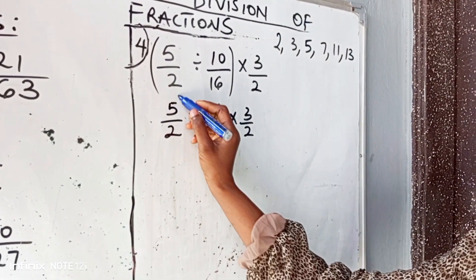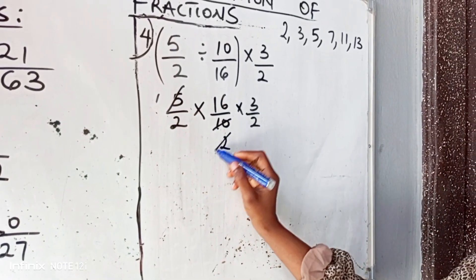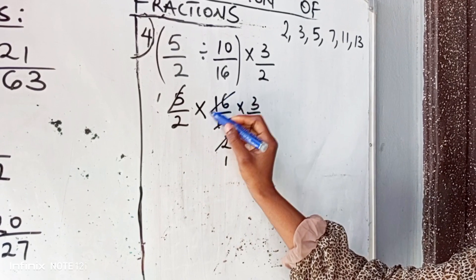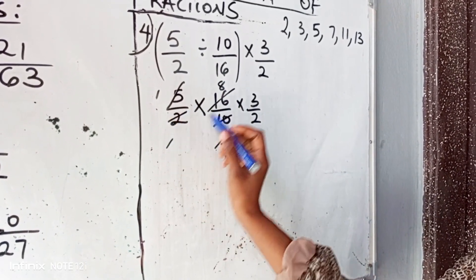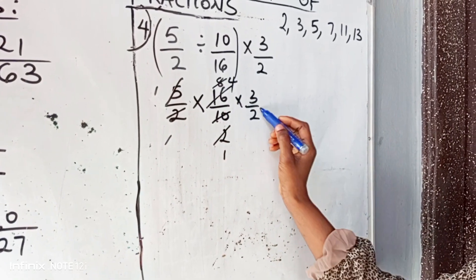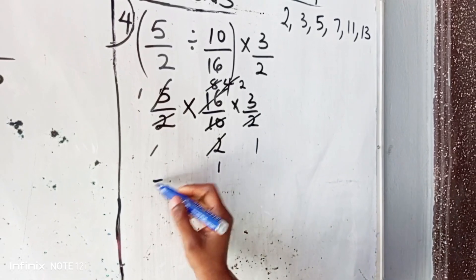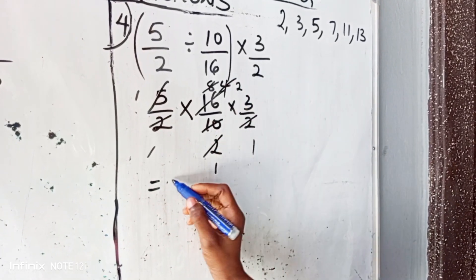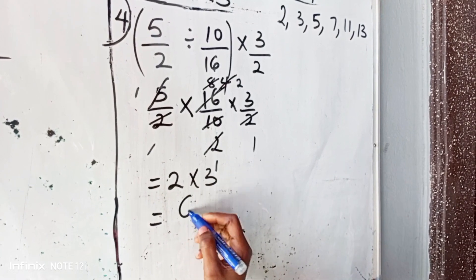Can 5 go into 10? Yes. 5 here, 1. 5 in 10, 2. 2 here, 1. 2 in 16, 8. 2 here, 1 again. 2 in 8, 4. 2 here, 1. 2 in 4, 2. So we have 2 times 3, and our answer equals to 6.